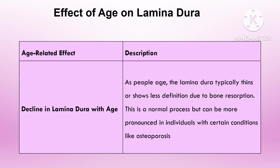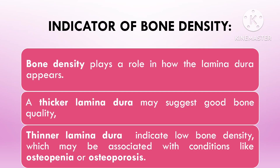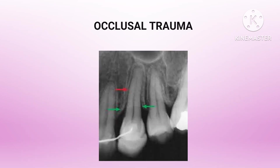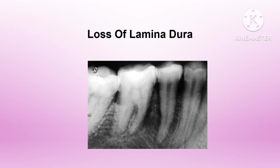With aging, the lamina dura may become thinner or less distinct due to reduced bone density or periodontal changes. Teeth subjected to higher occlusal loads, such as molars, may show a thicker lamina dura as a response to increased stress. Non-functional or missing teeth can show a reduced or absent lamina dura due to lack of stimulation. Normal bone remodeling can also lead to variations over time, especially in response to orthodontic tooth movement or minor trauma.